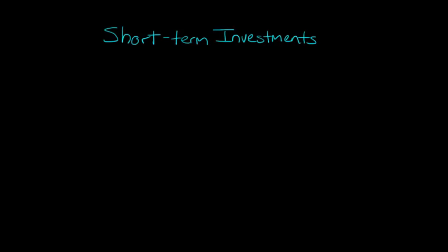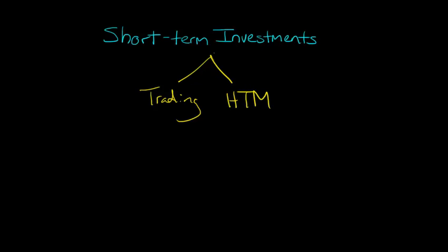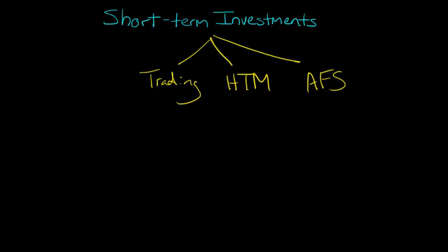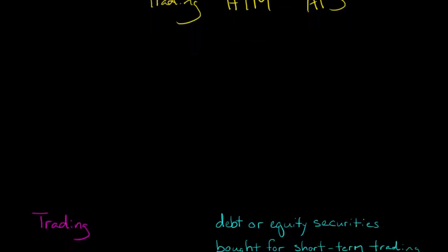We're really thinking about three different types of things: something called trading securities, held-to-maturity securities, and also something called available-for-sale securities. I'm just going to start talking about these in a little more depth.